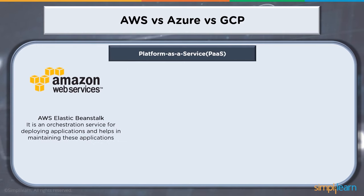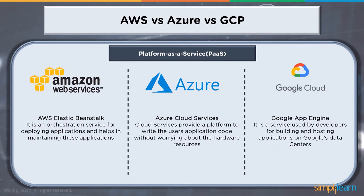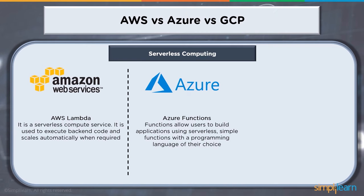When we talk about platform as a service: Amazon has Elastic Beanstalk, an orchestration service for deploying and maintaining applications. Azure Cloud Service provides a platform to write application code without worrying about hardware resources. Google App Engine is a service used by developers for building and hosting applications on Google's data centers. For serverless computing: Amazon's AWS Lambda is a serverless compute service used to execute backend code and scales automatically. Azure has Functions, allowing users to build applications using serverless simple functions with a programming language of their choice.